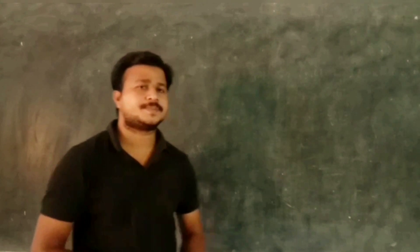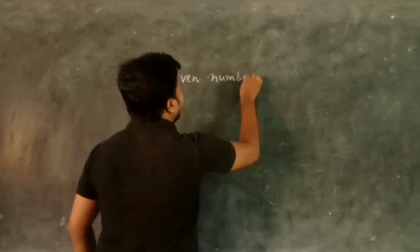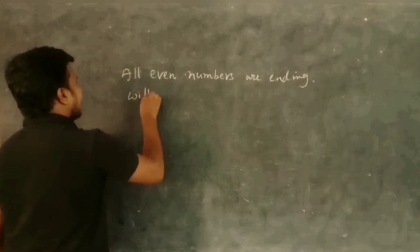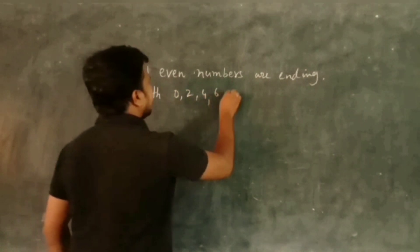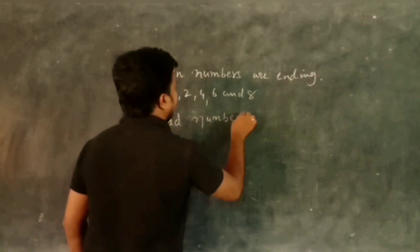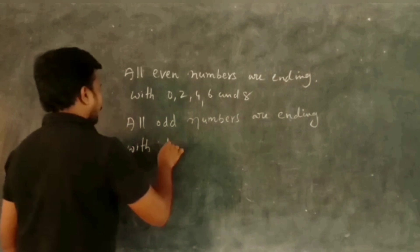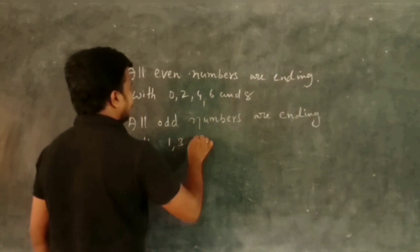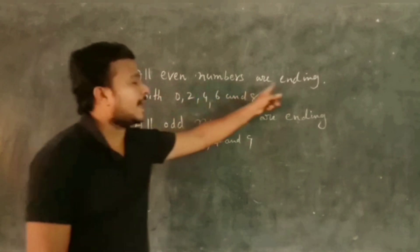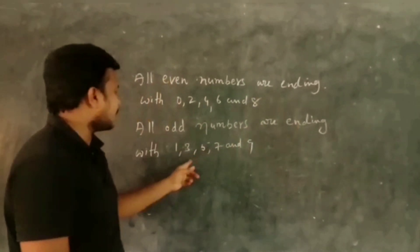Some key points about even and odd numbers. All even numbers are ending with 0, 2, 4, 6, and 8. All odd numbers are ending with 1, 3, 5, 7, and 9.